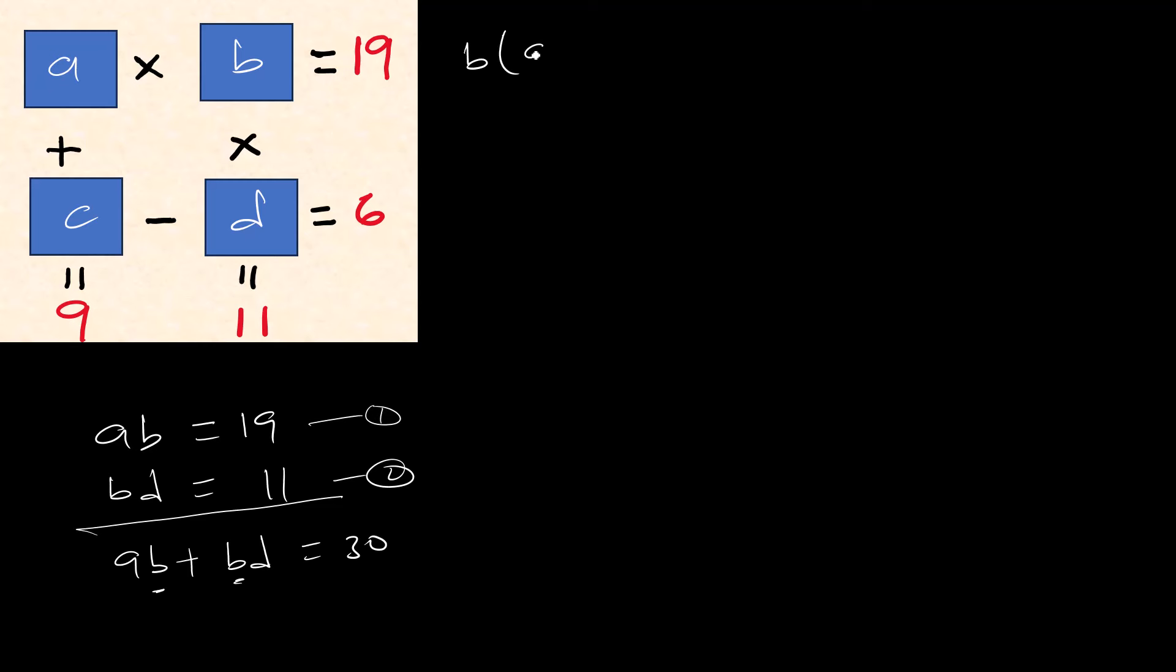Alright, can we factorize b out? Yes. Okay, so we can say b times (a plus d) equals to 30. Okay, so let's keep this.